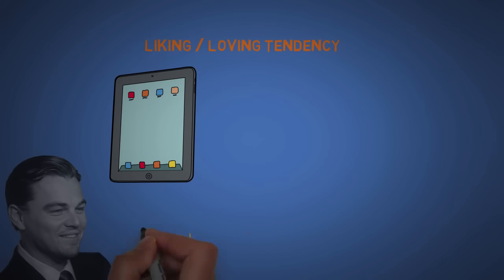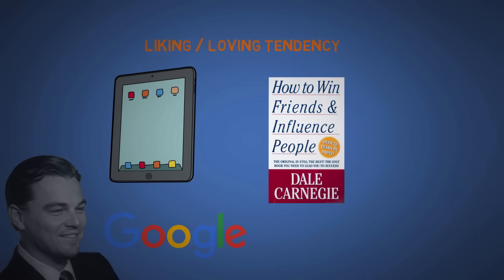The second is liking slash loving tendency. We tend to ignore the faults of other people, products, or companies that we admire. One of my favorite books on this subject is How to Win Friends and Influence People by Dale Carnegie. But in general, just be nice, look sexy, and people will be hypnotized by you.